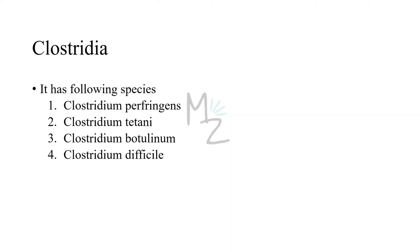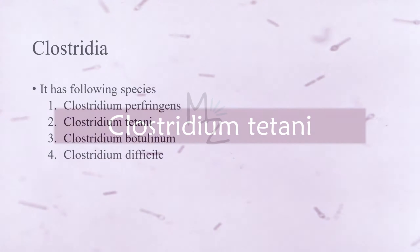Clostridium has four species. The first one is Clostridium perfringens, which has a detailed video available. The next three are Clostridium tetani, Clostridium botulinum, and Clostridium difficile.